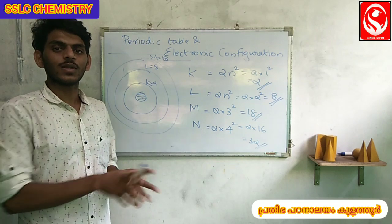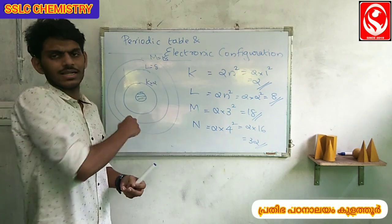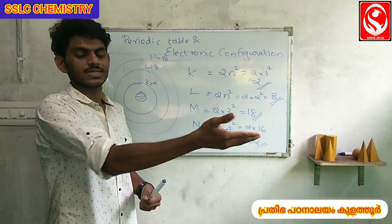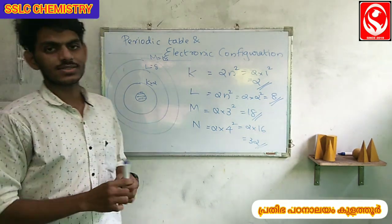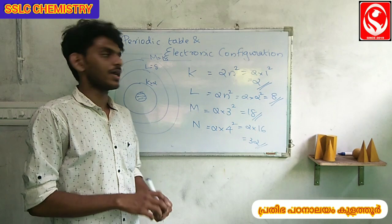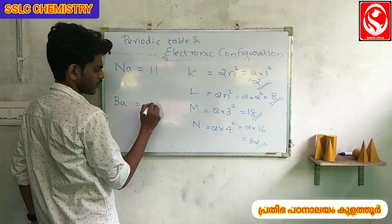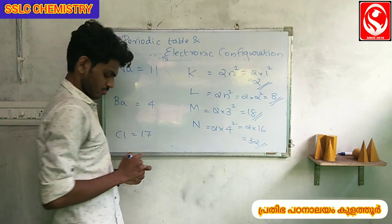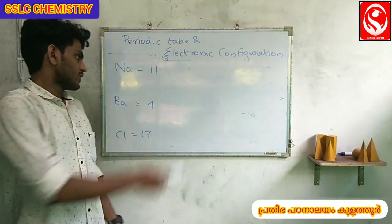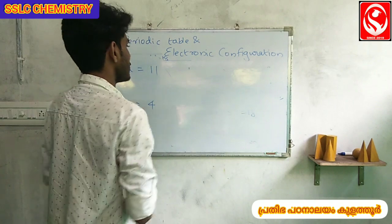This is an example of the nucleus model. Now we have questions. We have three elements here: sodium, barium, and chlorine. Sodium has atomic number 11. We will find the electronic configuration.